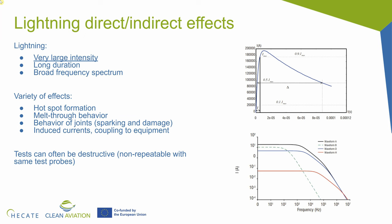For example, lightning effects. The main problem when we study lightning effects is that if we want to study the effect of a lightning in a laboratory, we have to reproduce lightning. But lightnings have very, very large intensity — we are talking about something in the range of tens to hundreds of thousands of amperes over a very long duration. So it's a challenge to reproduce them in a lab.